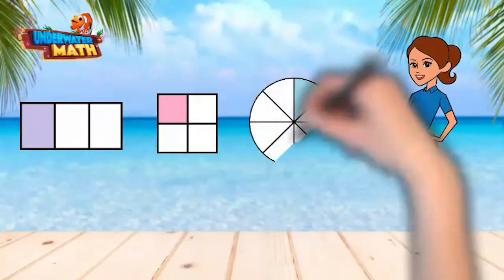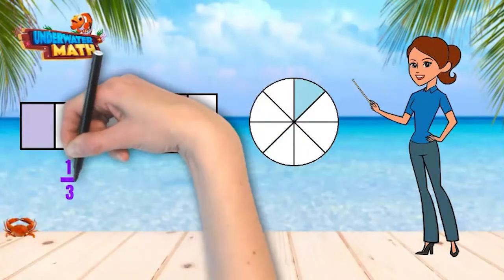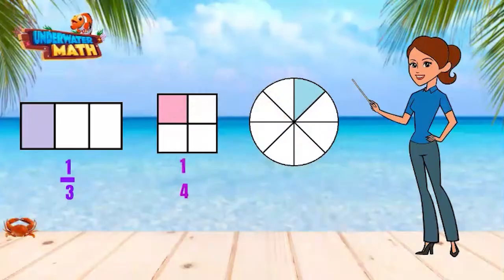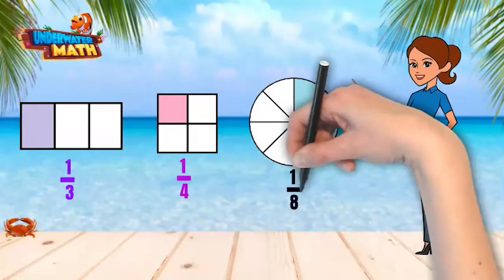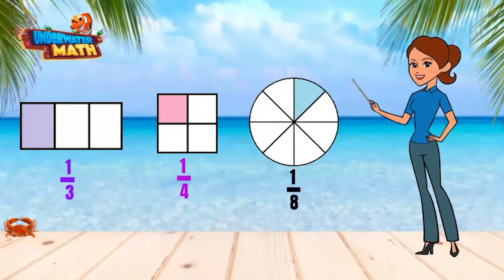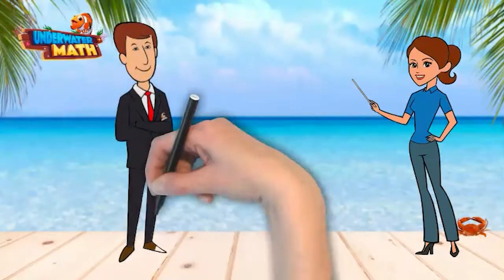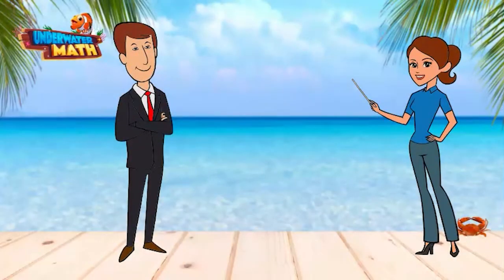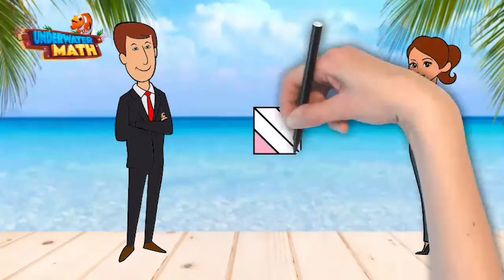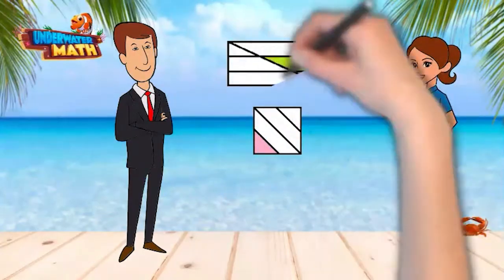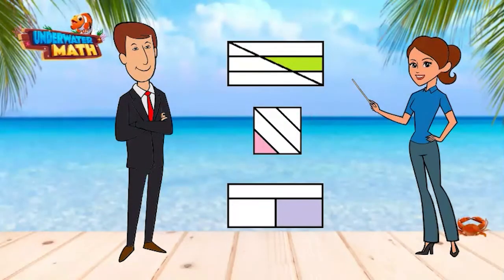Each of these fraction models shows a unit fraction. They have equal parts and are representing one piece. This is Adam, and he is going to share a couple more important details about unit fractions. Make sure you are paying attention. Thank you, Ms. Ali! Let's look at these three models. They each have one piece shaded in, but they are not fractions. Fractions require equal pieces of the whole, and a unit fraction shows one equal piece.